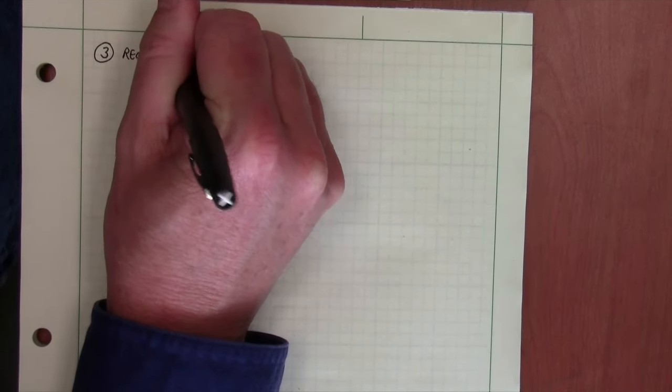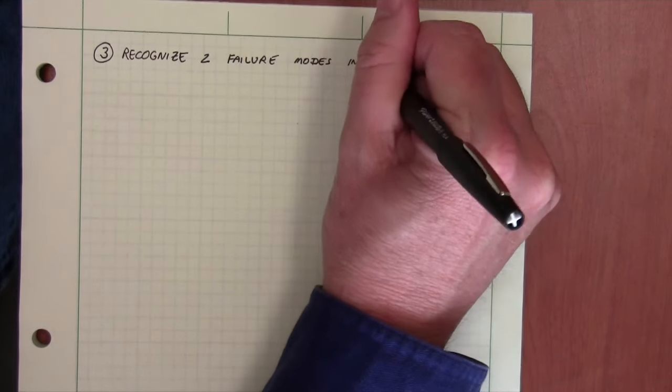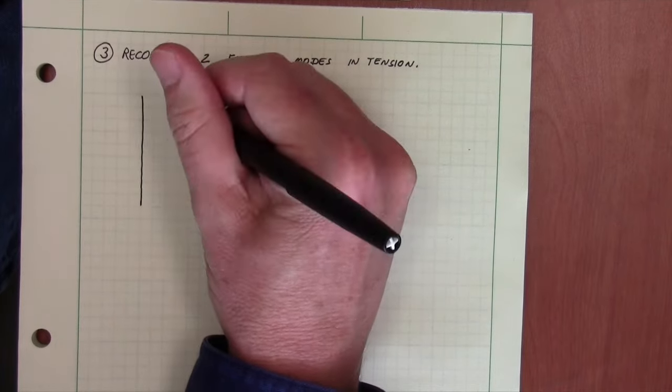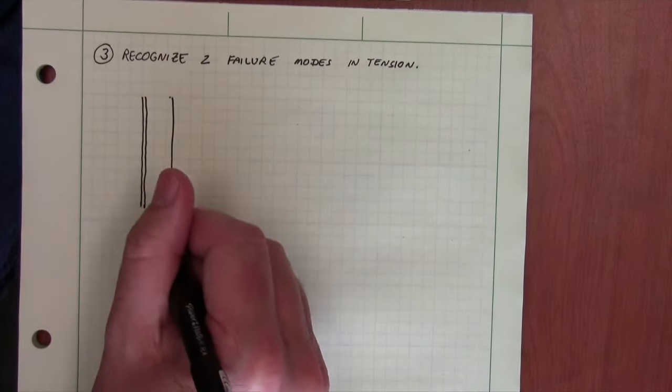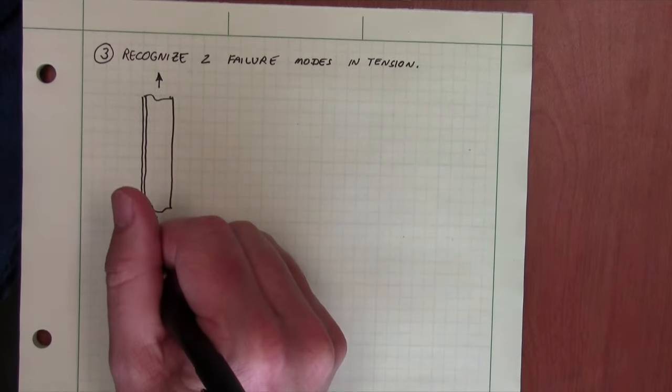So learning objective three was to recognize two failure modes of steel tension members. So let's imagine that we have an angle. And that angle is in tension. This could be a hanger for a catwalk or some other item.